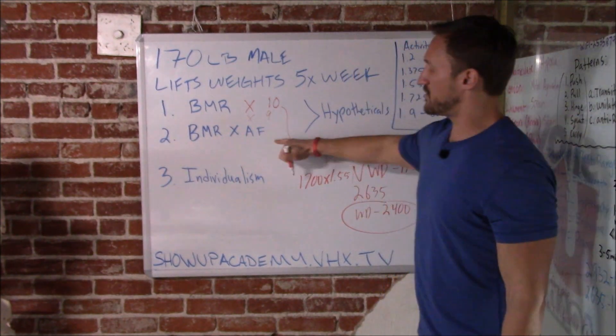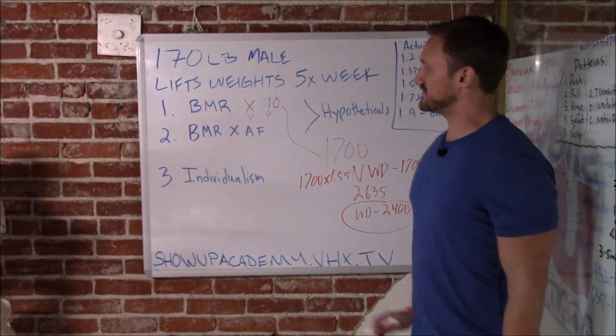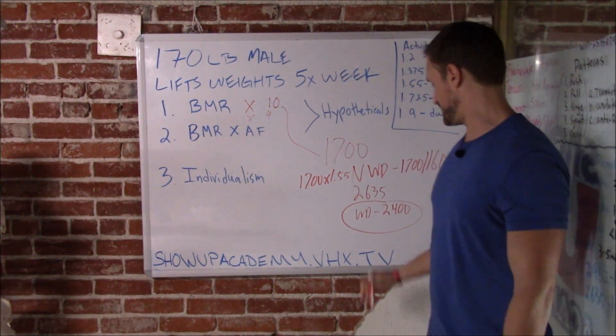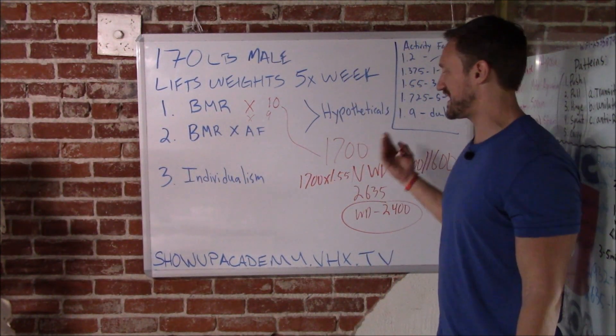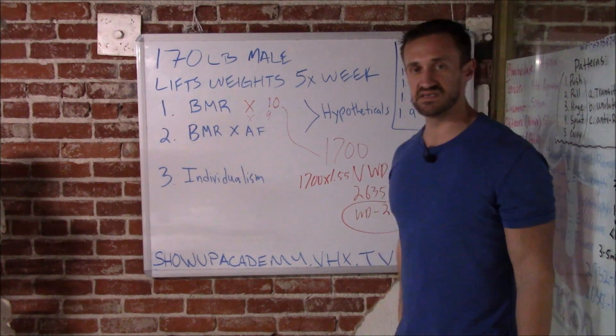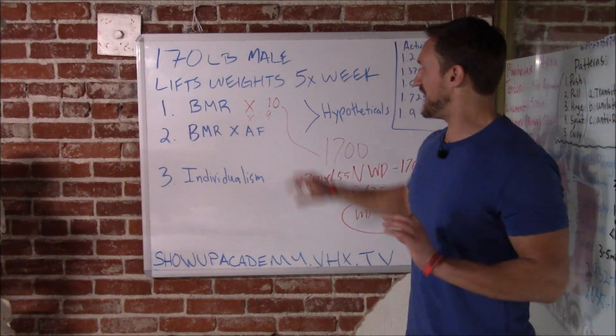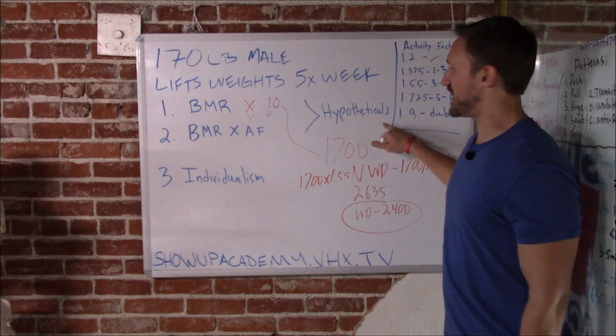That's your BMR — your basal metabolic rate times the activity factor. On a workout day: 2,400 calories. On a non-workout day: maybe 1,700. Those are the hypotheticals.